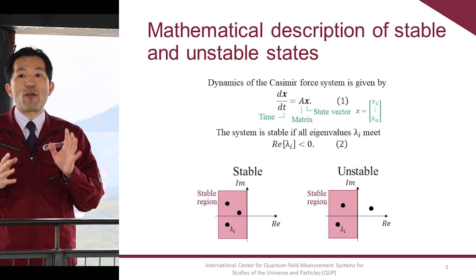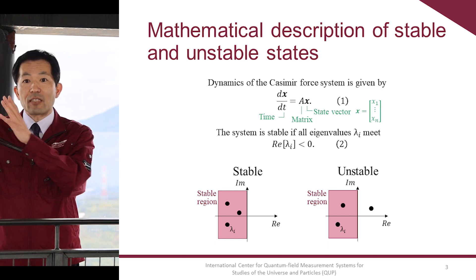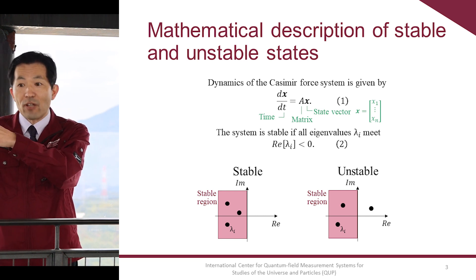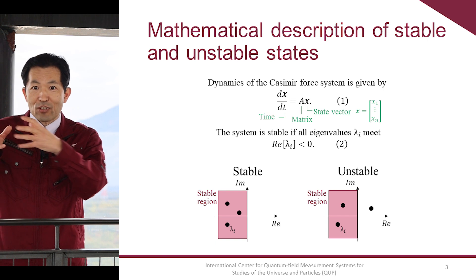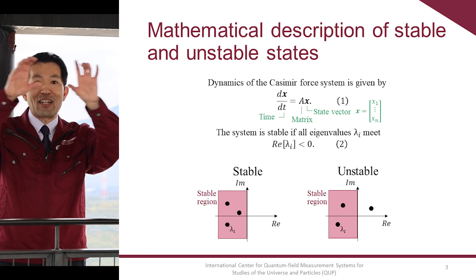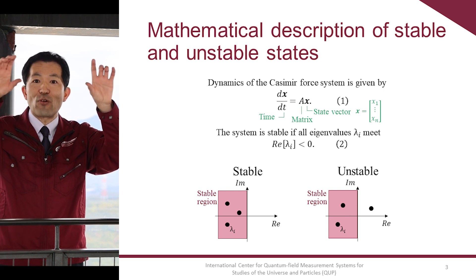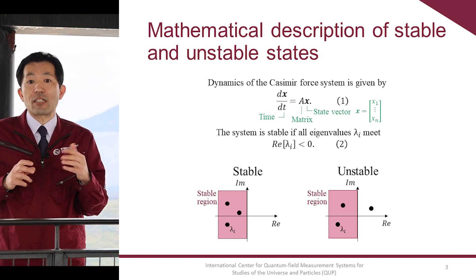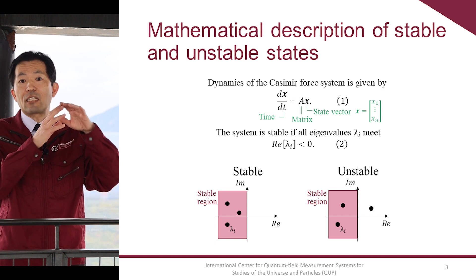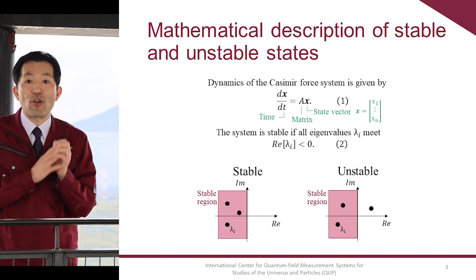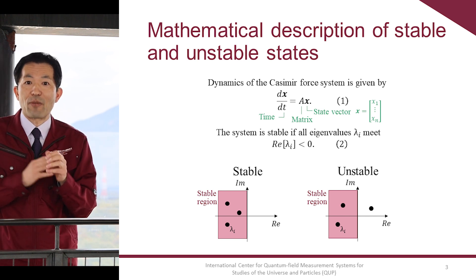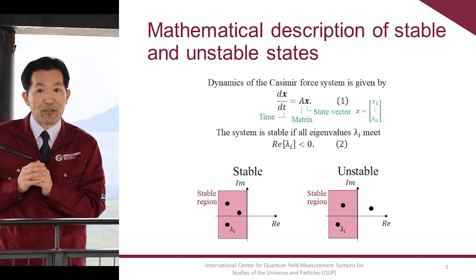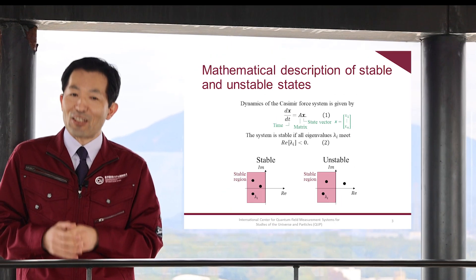So when we build a system, retrieve parameters, and obtain the simple equation, we can judge whether the system is stable or not by observing the eigenvalues. That's all. See you later.